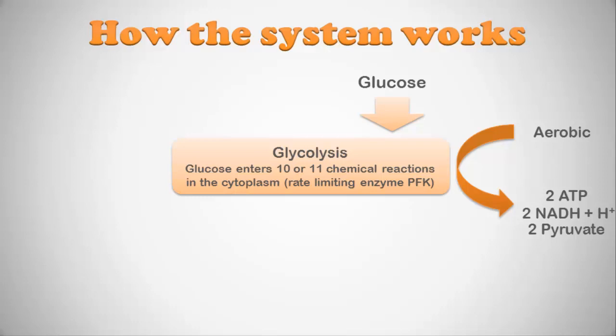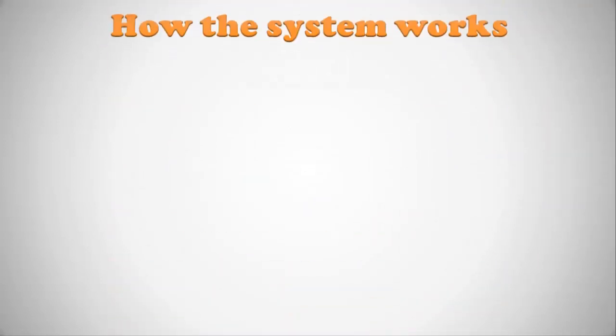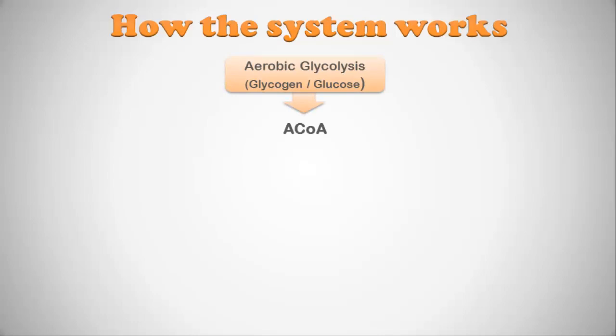One important point: glycolysis itself happens in the cytosol and it's always an anaerobic process. Students often have difficulty with this, but glycolysis is always anaerobic — it never takes place with oxygen. What really matters is whether there's oxygen around at the end of glycolysis. If you break down glucose or glycogen and end up with pyruvates at the end of glycolysis, and there is oxygen present, those pyruvates will be converted into something other than lactic acid — specifically acetyl coenzyme A, which is an intermediary. If there is no oxygen, those pyruvates become lactic acid.